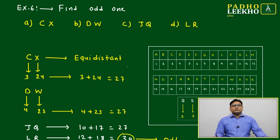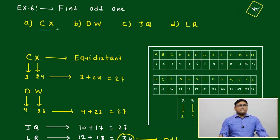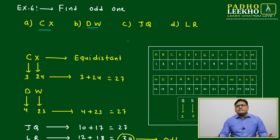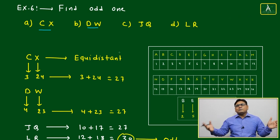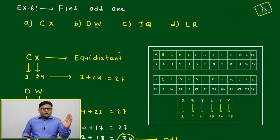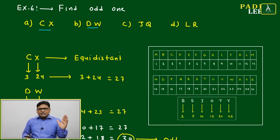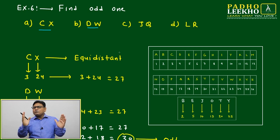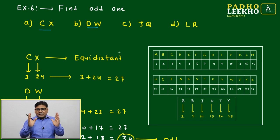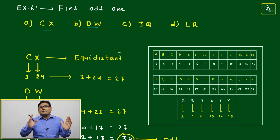And odd one again based on the alphabets CX, DW, JQ, LR. Just by seeing, we can say C and X - how can they be interrelated? Only one possibility: counting from the start of the alphabet and counting from the last of the alphabet. C and X can be equidistant from the start and end.